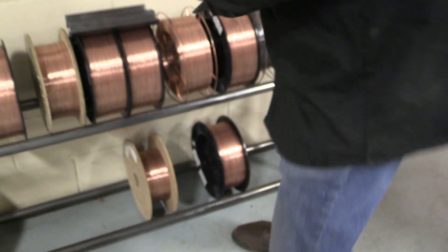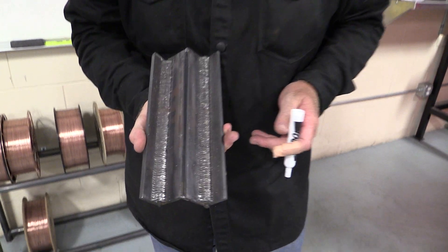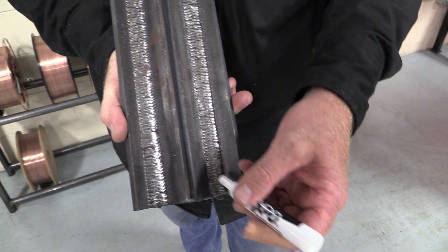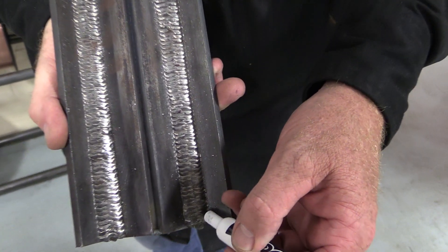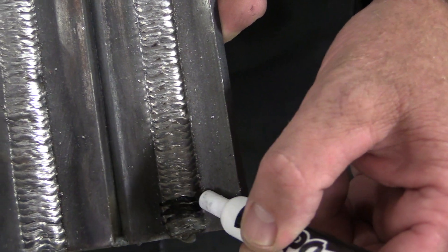The other technique is weave beads. This is different because this is one solid weld and we take that puddle and we make it go back and forth and back and forth across there.